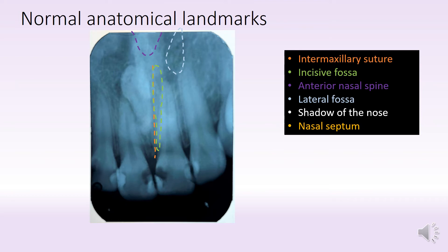You also see the shadow of the nose, which is indicated by this white line here. And of course you see a dense area overlapping the mesiodents, which is the nasal septum. So those are the normal anatomical landmarks seen in this maxillary anterior radiograph.